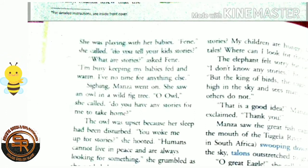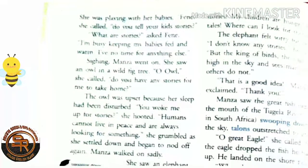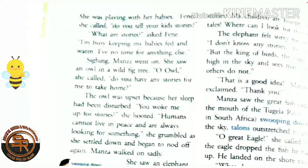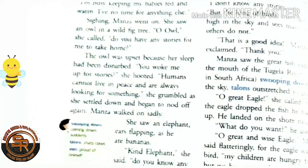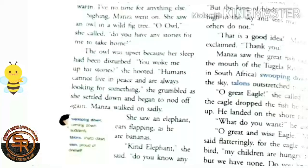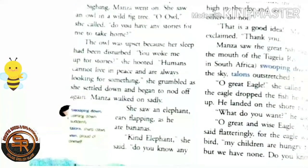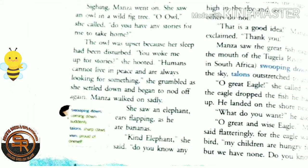'But the king of birds — the eagle — who is high in the sky and sees many things others do not, he may know.' 'That is a good idea!' Manza exclaimed. 'Thank you.' Manza saw the great fish eagle from the south, near the Together River, swooping down from the sky, talons outstretched to grab a fish.